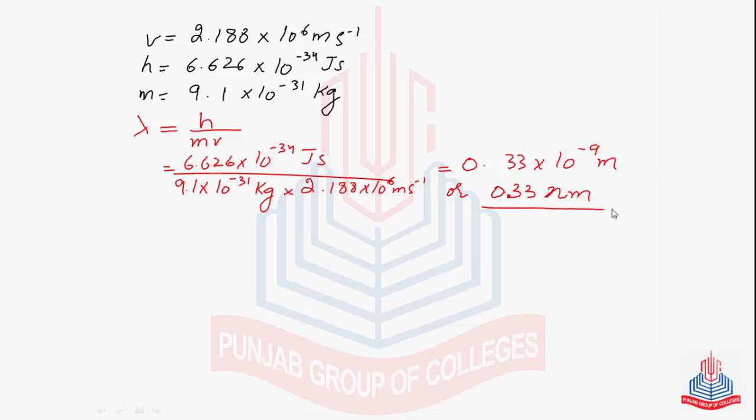What conclusion can be made from this? The wavelength of the electron moving in the first orbit of the hydrogen atom is comparable to the wavelength of X-rays.